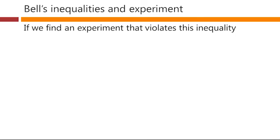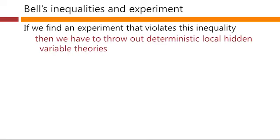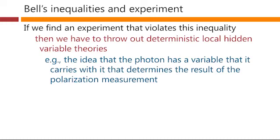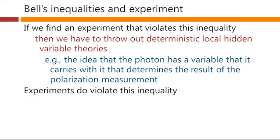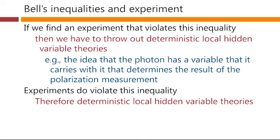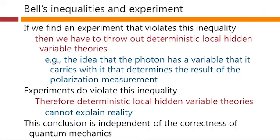If we find an experiment that violates this inequality, then we have to throw out deterministic local hidden variable theories — the idea that the photon has a variable it carries with it that determines the result of the polarization measurements we make. However, experiments do violate this inequality. Therefore, deterministic local hidden variable theories cannot explain reality. This conclusion is independent of the correctness of quantum mechanics — we did not use any quantum mechanics in that argument. So this argument applies to all deterministic local hidden variable theories. Hence, if quantum mechanics is to explain the results of experiment, quantum mechanics cannot be explained by local hidden variable theories either.